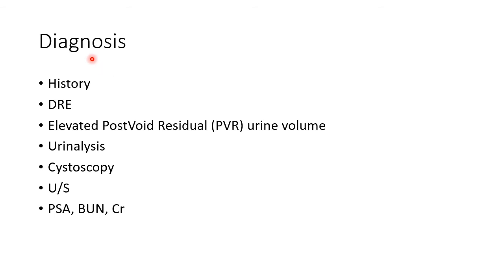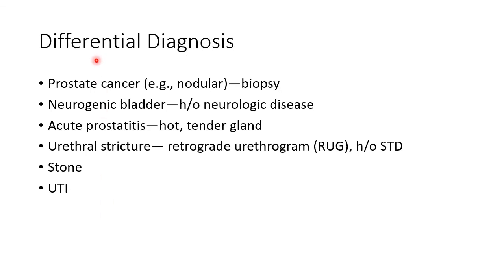Now let us see about the diagnosis of BPH. In BPH, we have to take a complete history and we have to do a digital rectal examination. In BPH, there will be elevated post-void residual urine volume. Other investigations helpful in the diagnosis of BPH are urine analysis, cystoscopy, ultrasound, prostate specific antigen, blood urea nitrogen, and creatinine.